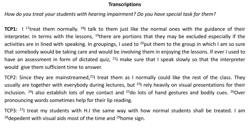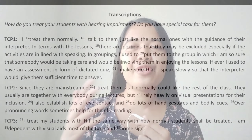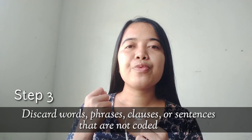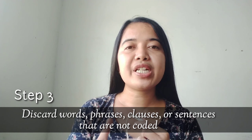You may also use different codes — you can search the internet for codes you are comfortable doing. After coding all the information in the second step, the thing we have to do in the third step is to discard words, phrases, clauses, or sentences that are no longer coded and we deem irrelevant. We then table or list all the units of relevant meaning and discard the unnecessary words, phrases, and sentences we deemed irrelevant.